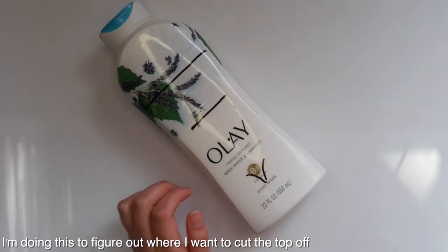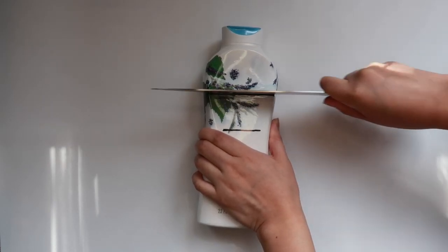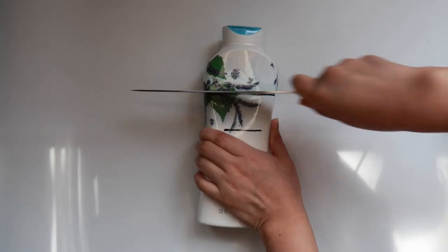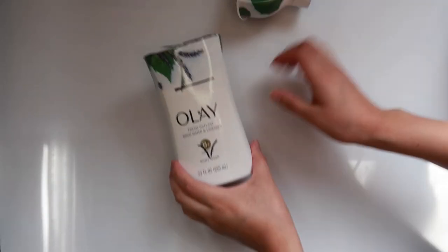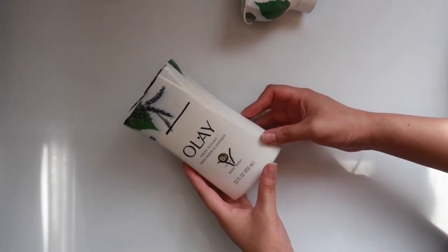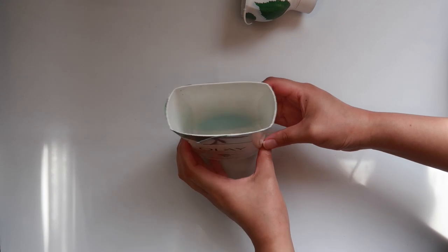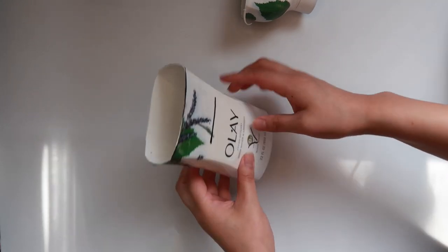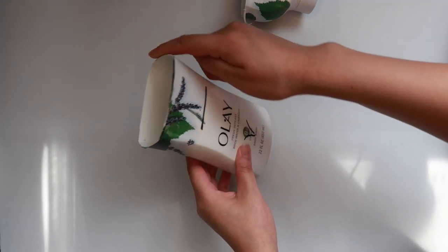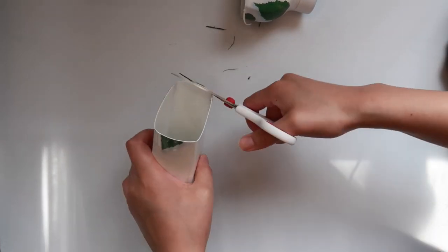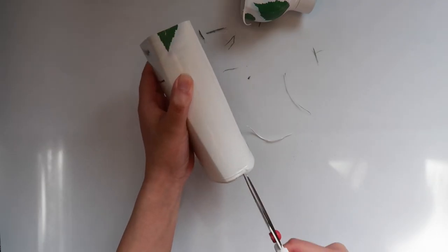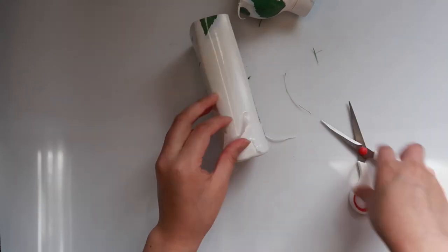I'm gonna cut off the top and I'm just gonna use a knife to do this. And there we go, we have the top off. And if you have a little bit of leftover residue in the bottle like I do you can just wash it out. Now I'm gonna trim along the rim of the top to make it more even.